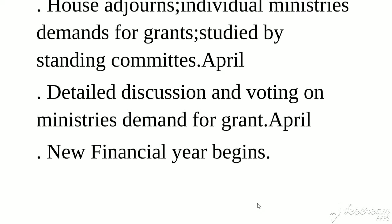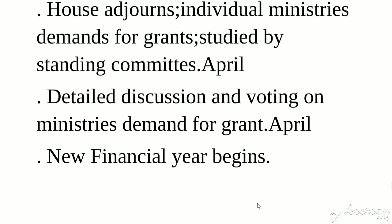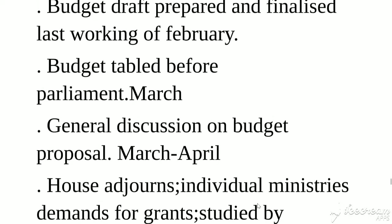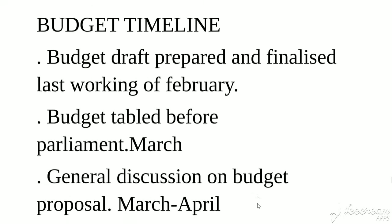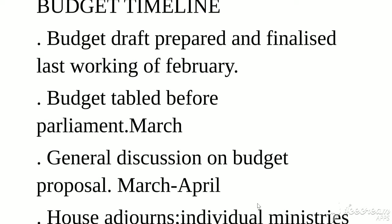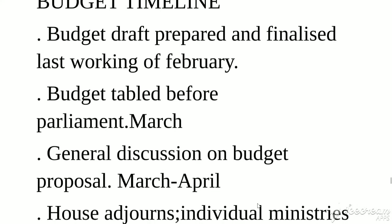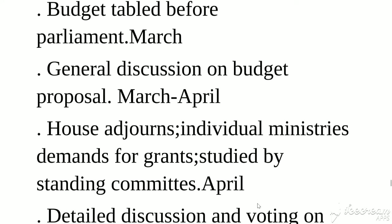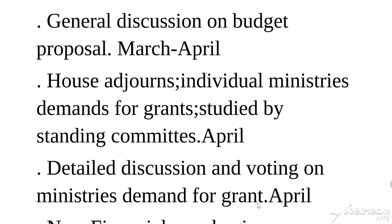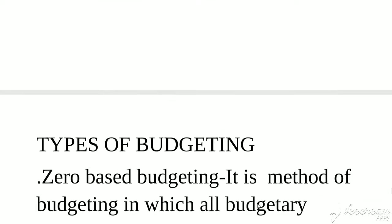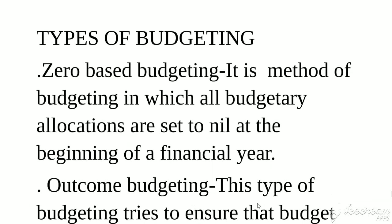The stages in budget enactment are: first, the presentation of budget on the floor of the house before Lok Sabha; second, general discussion; third, vote on account; fourth, departmental scrutiny by standing committees; fifth, voting on demands for grants; sixth, passing of the Appropriation Bill; and finally, passing of the Finance Bill.